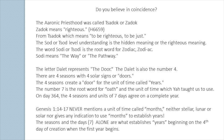On day 364, the four seasons and the units of seven days agree on a complete year. Genesis 1:14-17 never mentions a unit of time called months — neither stellar months, lunar months, or solar months — nor gives any indication to use the term months at all to establish years. The seasons and the days — seven days of creation alone — are what establishes a year, beginning on the fourth day of creation when the first year began with the stars being placed in the heavens.